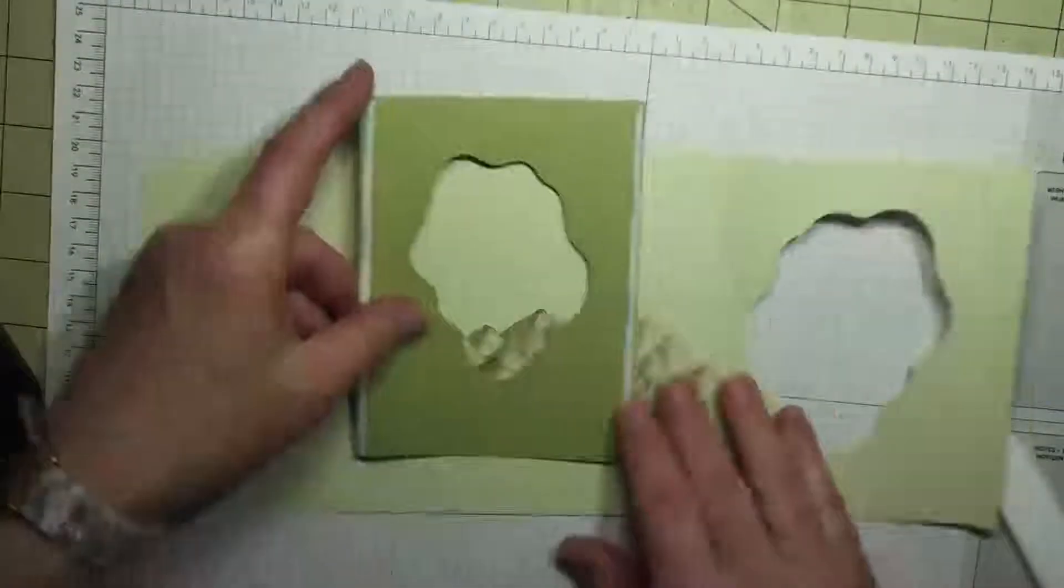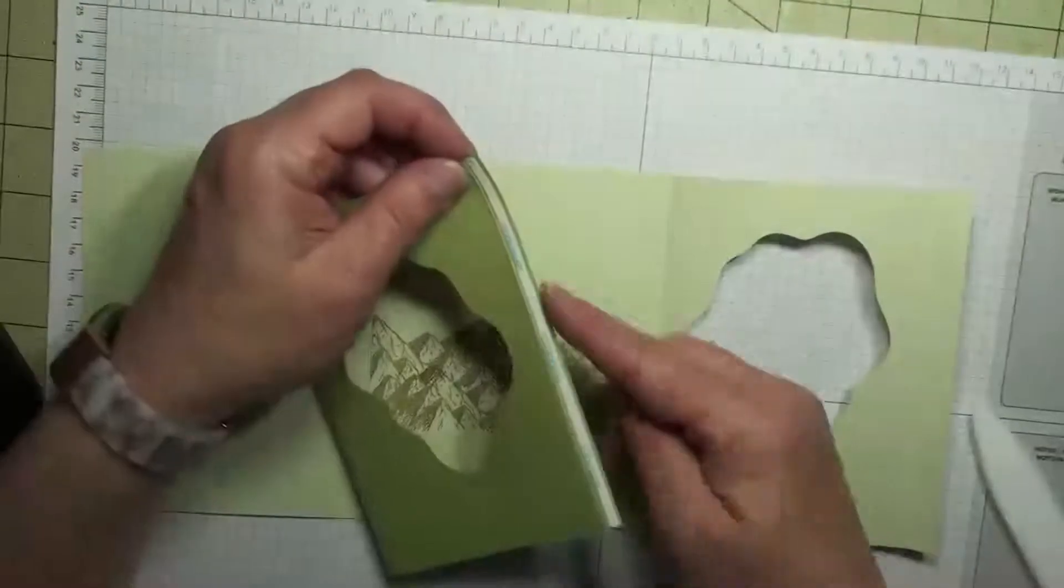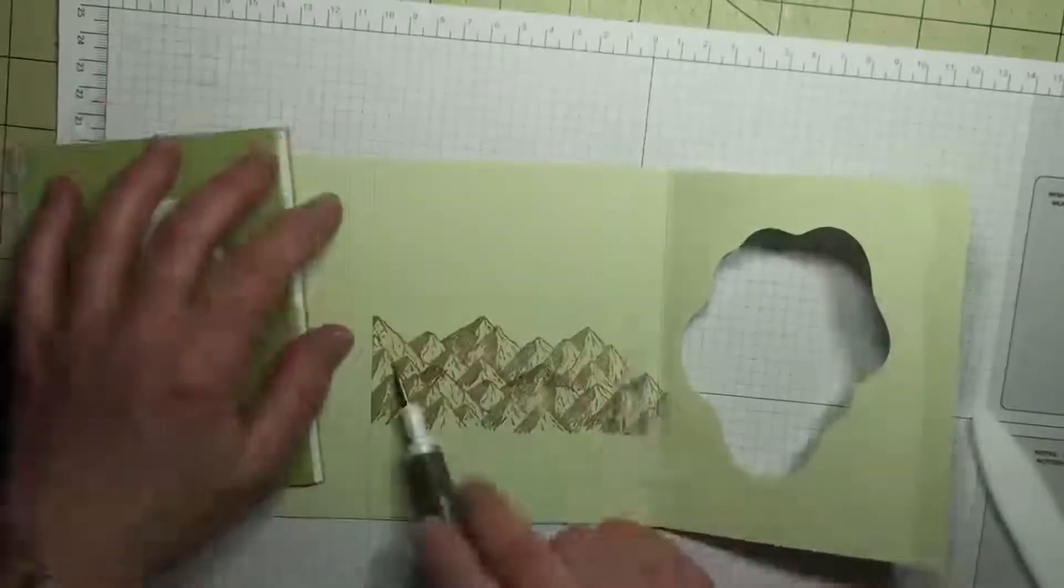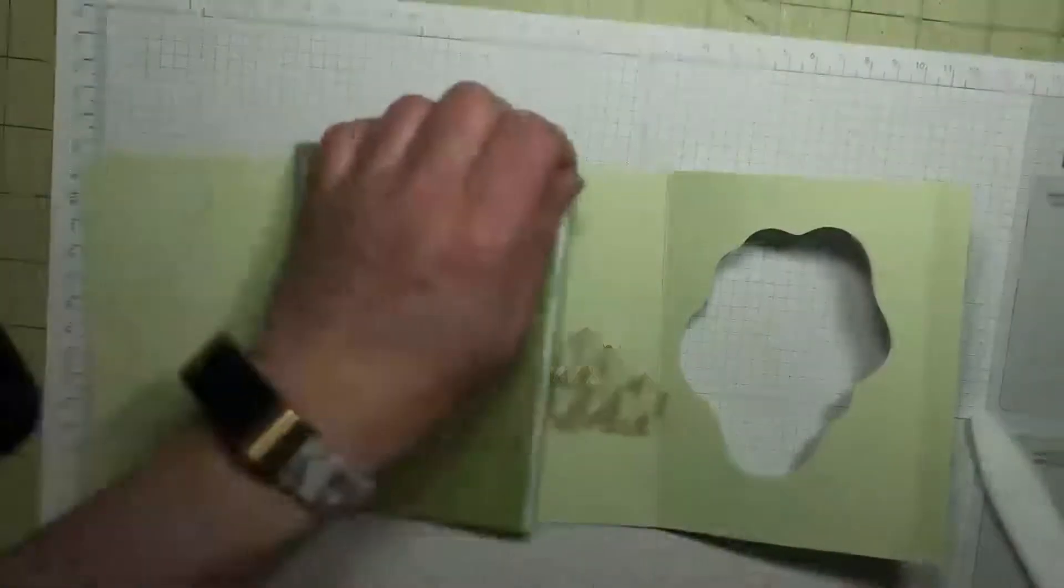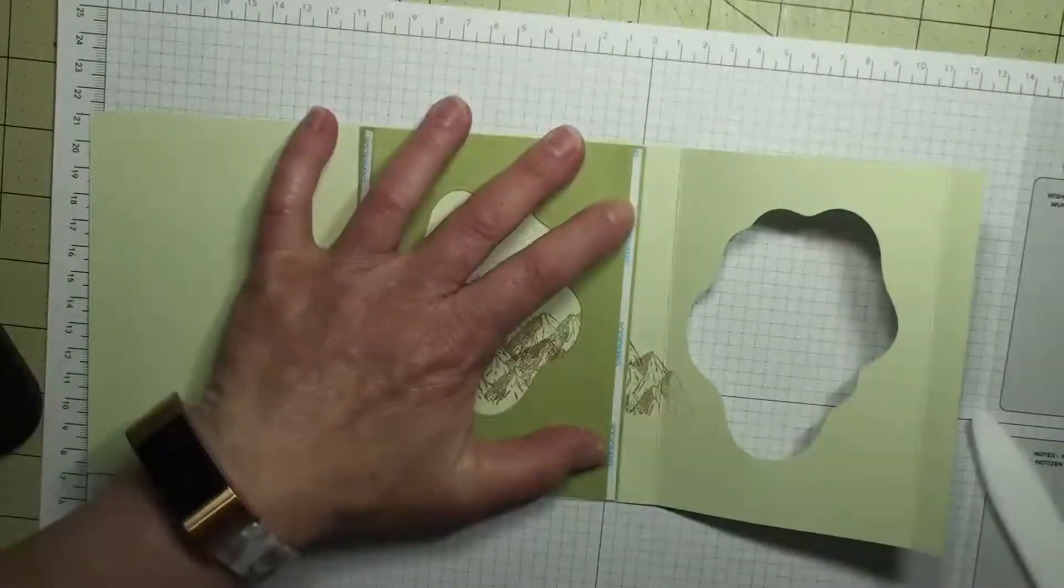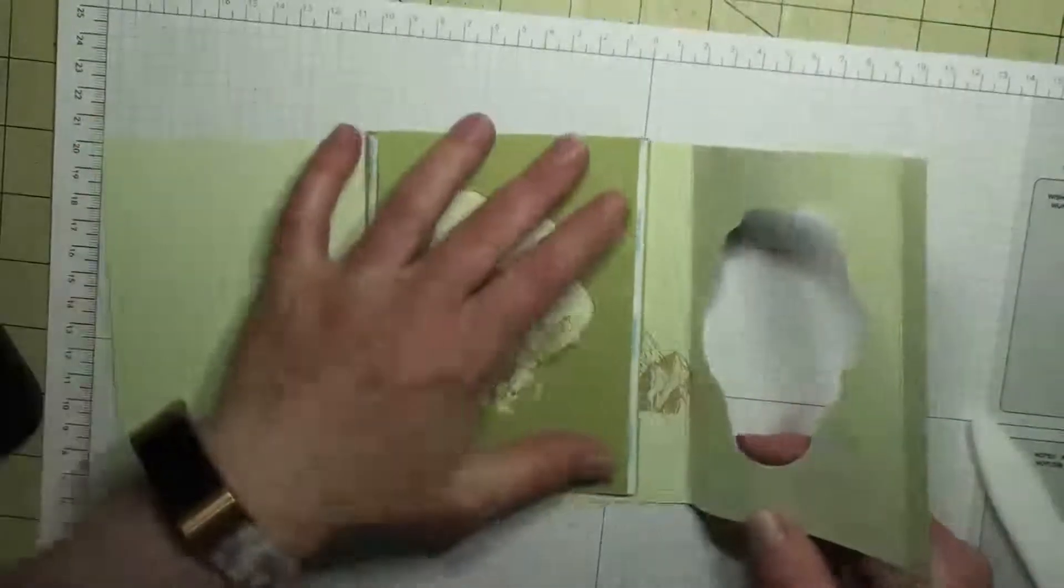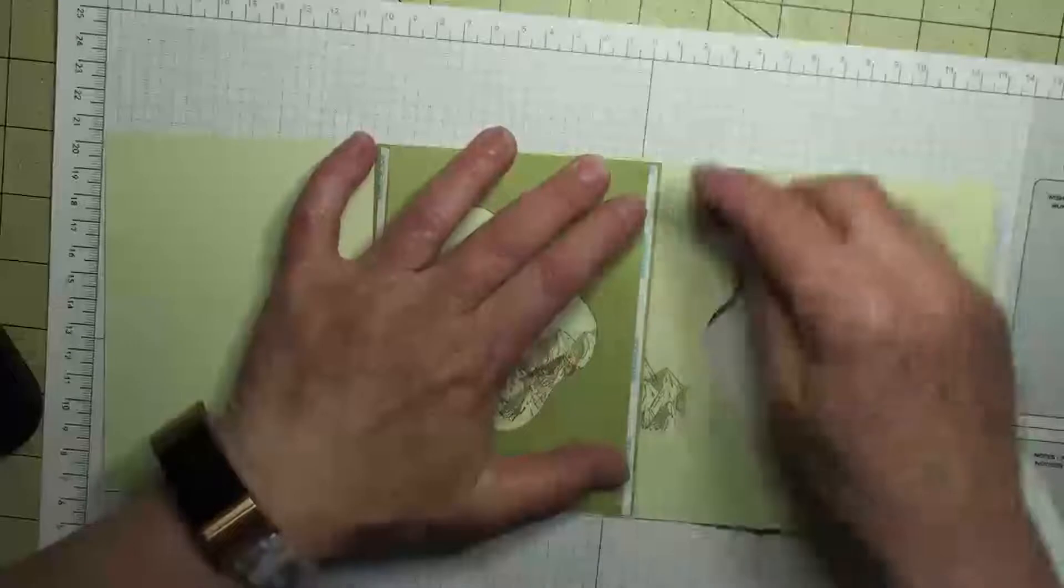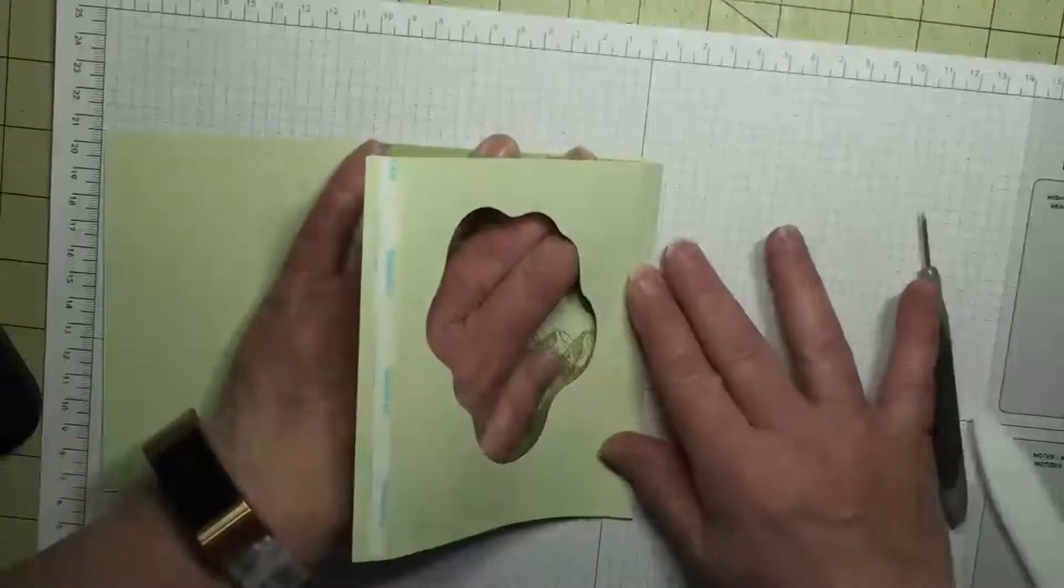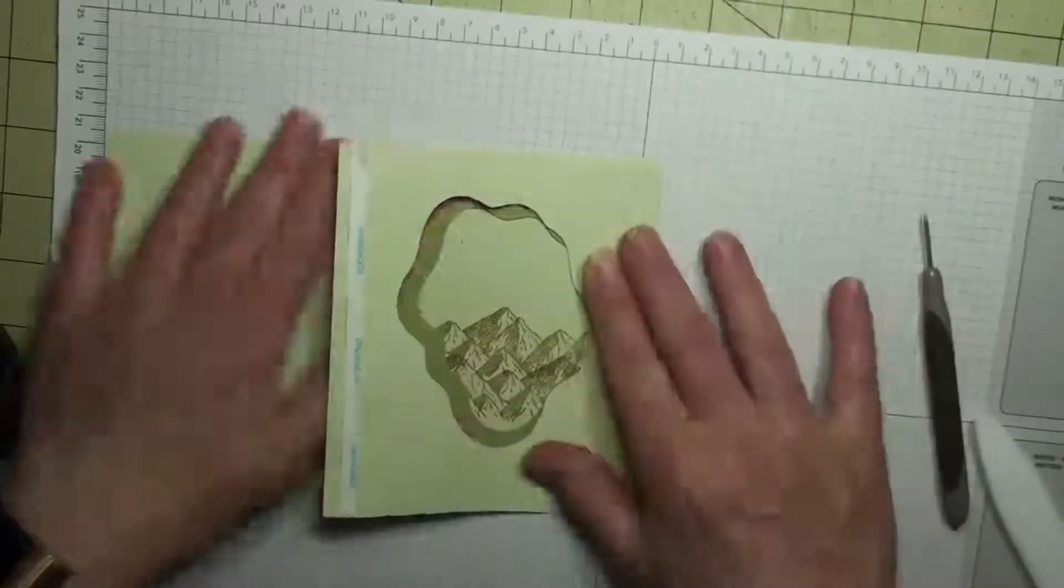Okay, now what I want to do is I'm going to line this edge right here, not the score line but the edge, up with this first score line here. And then I'm going to release my backing and just close the card.